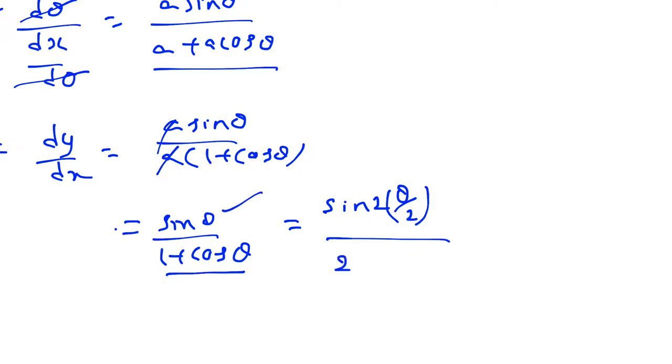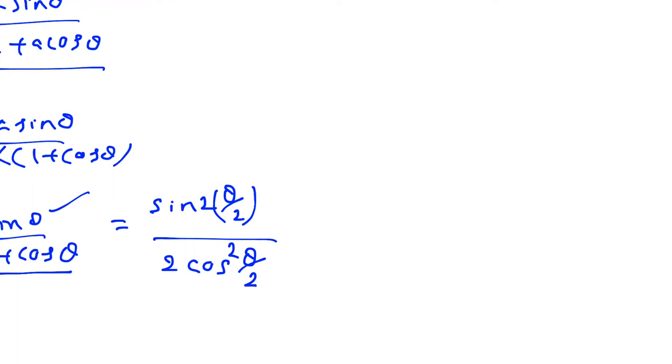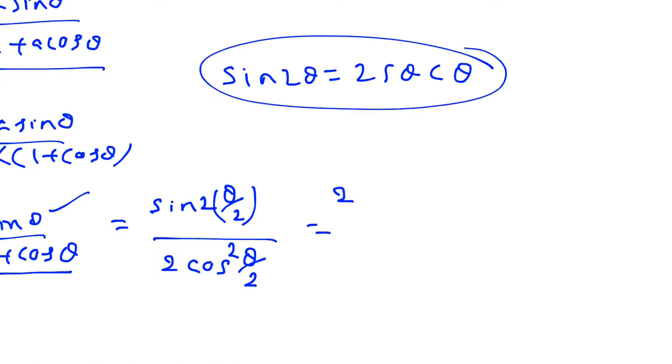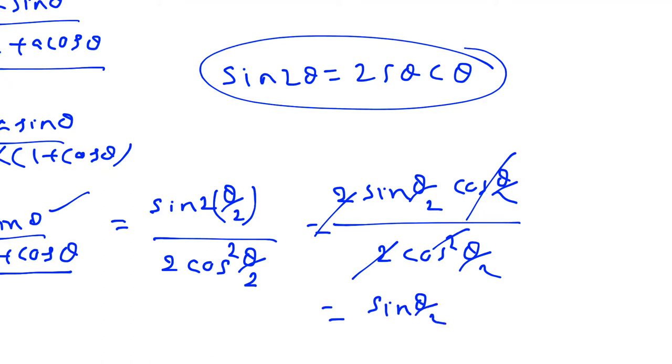In the numerator, using the formula sin 2θ = 2 sin θ cos θ, we get 2 sin(θ/2) cos(θ/2) divided by 2 cos²(θ/2). The 2's cancel, one cos cancels, leaving sin(θ/2)/cos(θ/2).